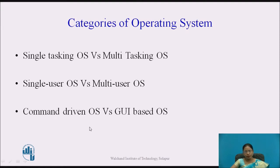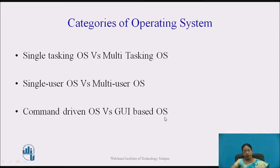The next category is command-driven operating system versus GUI-based operating system. For a command-driven OS, the best example is DOS — I need to write a command to execute a particular task. Whereas a GUI, or graphical user interface based operating system, is Windows, where I can perform different tasks with mouse clicks. There is a GUI available — I click it and perform the task.